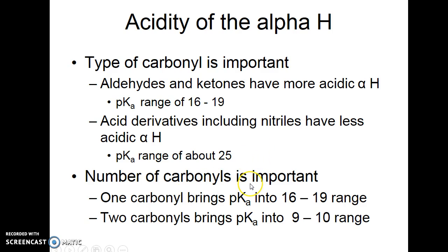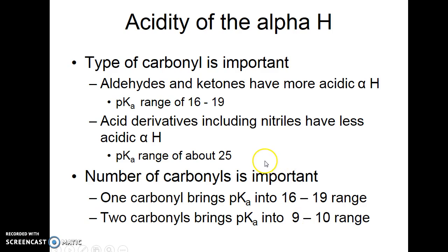The number of carbonyls on that alpha carbon is important too. If you have cyclohexanone, its pKa is in the 16 to 19 range. But if you have two carbonyls and one carbon is alpha to both carbonyls, it makes it much more acidic, and then something like sodium ethoxide is a plenty strong enough base to deprotonate it.